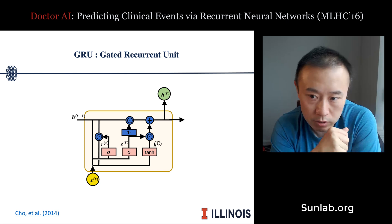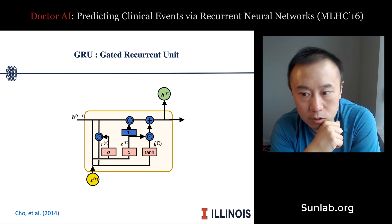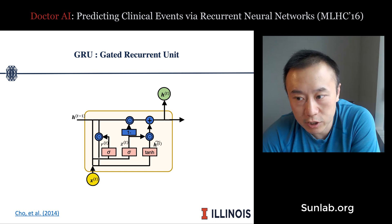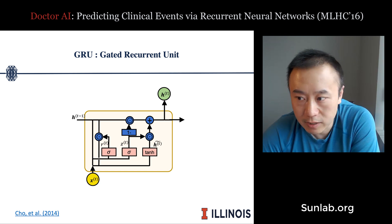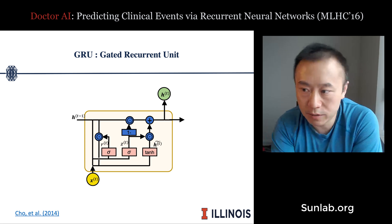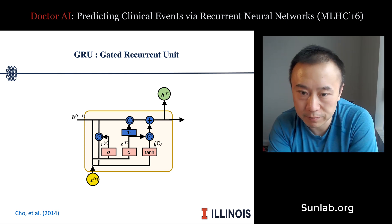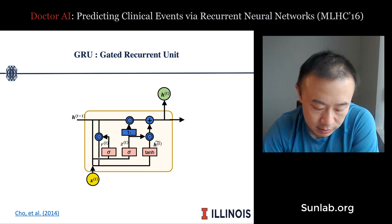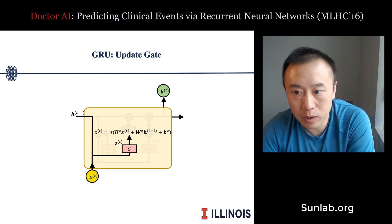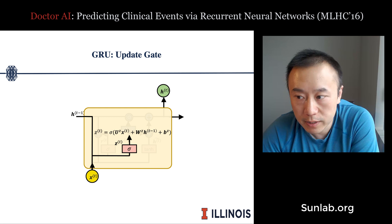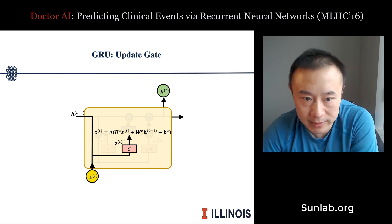In Doctor AI, they use a particular RNN variant called GRU — Gated Recurrent Unit — as published by Cho et al. in 2014. They introduced a different set of gating mechanisms, and we'll dive into those now.